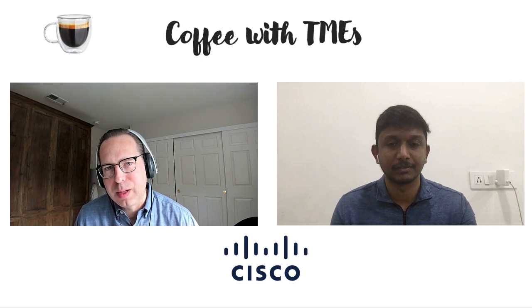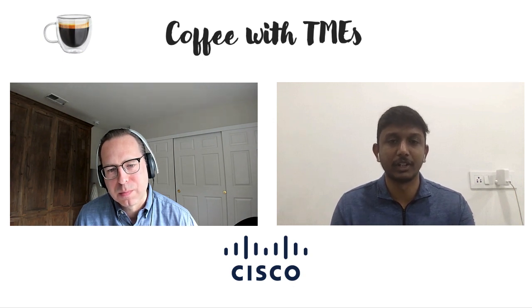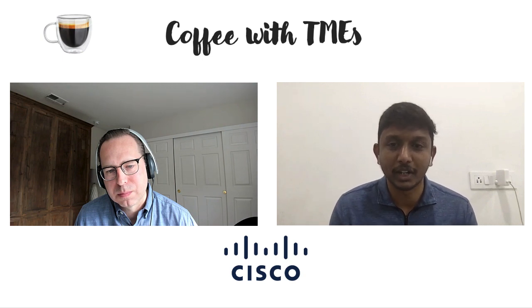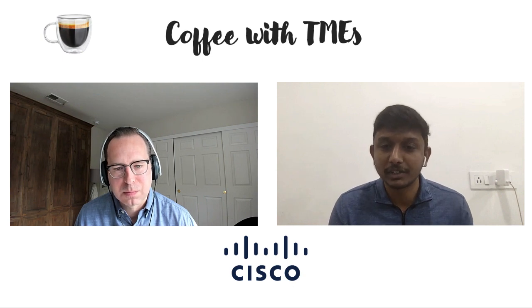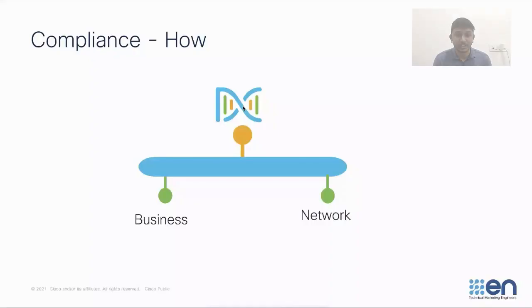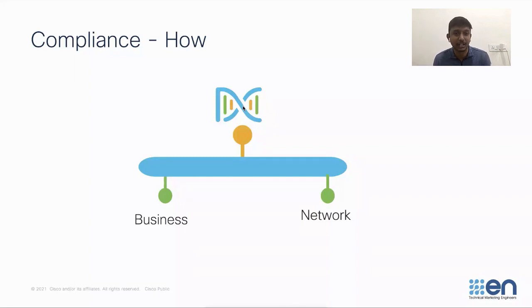Configuration compliance was also in Cisco Prime. How is this different? When it comes to compliance in DNA Center, we've segregated it into two buckets - network side and business side. The network side covers things like CLI-level conflict changes and intent deviation. The business side covers PCI standards, security advisories, and HIPAA compliance. Those are the two pillars of compliance in DNA Center.